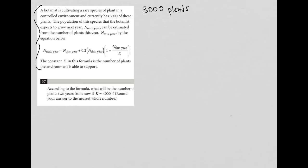The population of this species that the botanist expects to grow next year can be estimated from the number of plants this year, right, so the 3,000, by the equation below. Okay, so we have this equation here to figure out how many plants the botanist will have a year from now.